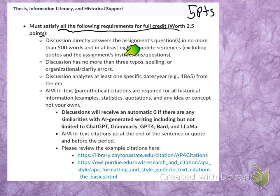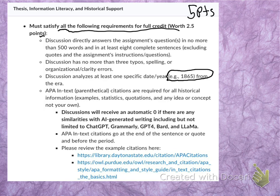No writing is perfect, but please do your best to limit typos, spelling, organizational, and clarity errors to no more than three in each discussion. Moreover, since this is a history class, you will need to use historical evidence and dates to support your arguments. For example, say you are evaluating the end of the American Civil War and Reconstruction — you will need to use a specific date to provide the reader with context, such as 1865 for the end of the Civil War and the beginning of Reconstruction.